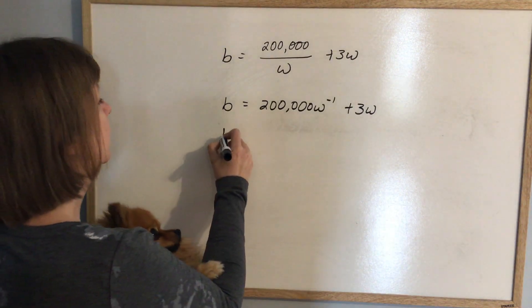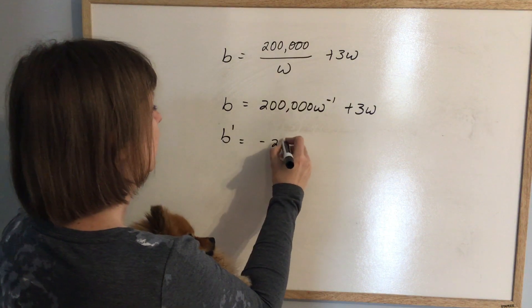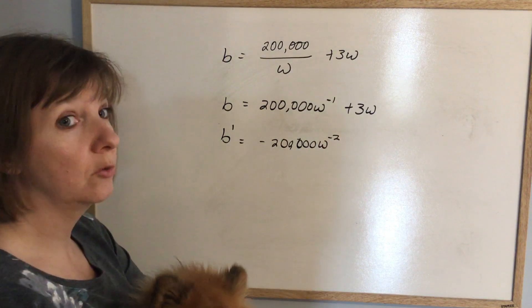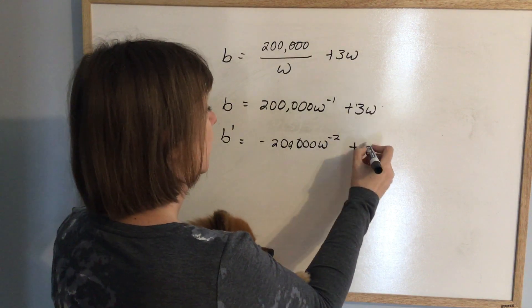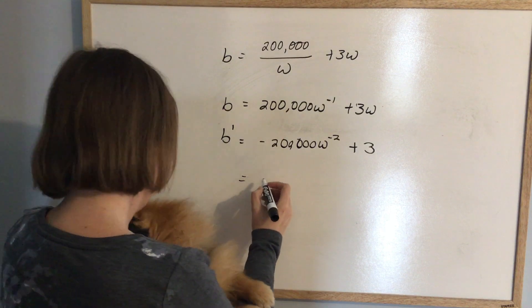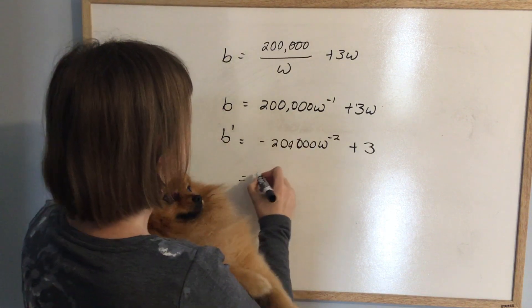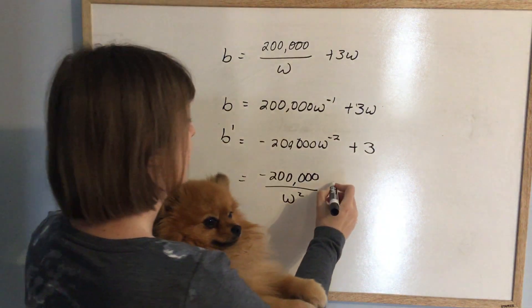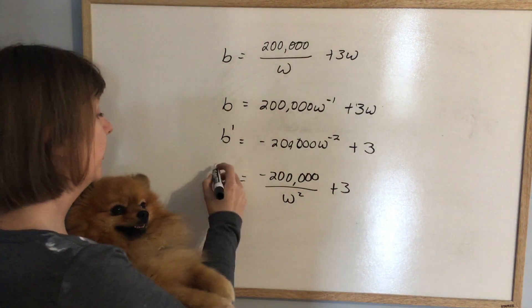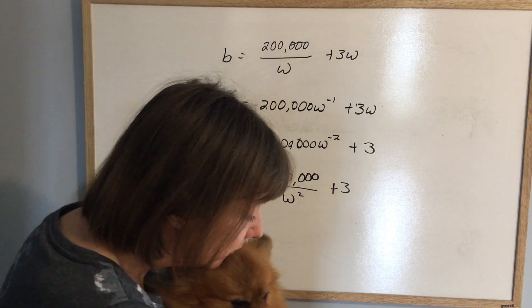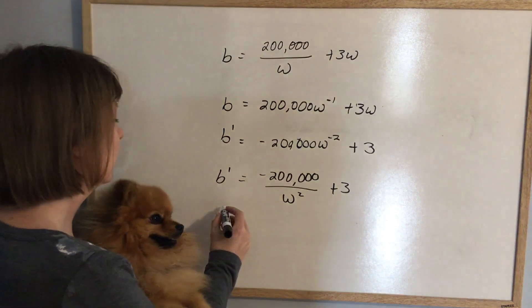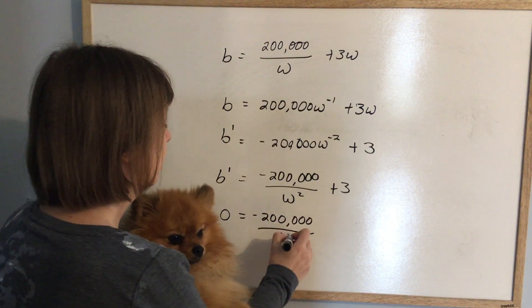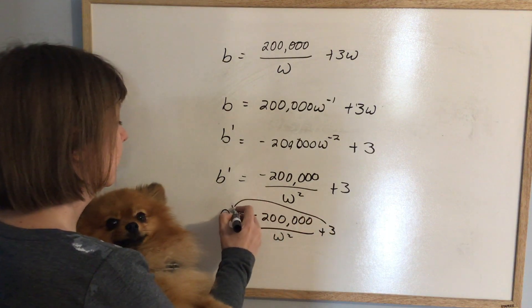Taking the derivative: bring the negative one down to get negative 200,000W⁻², plus the derivative of 3W is just 3. Writing that with positive exponents: the derivative is -200,000/W² + 3. That is the derivative. Now I have to make it equal to zero.